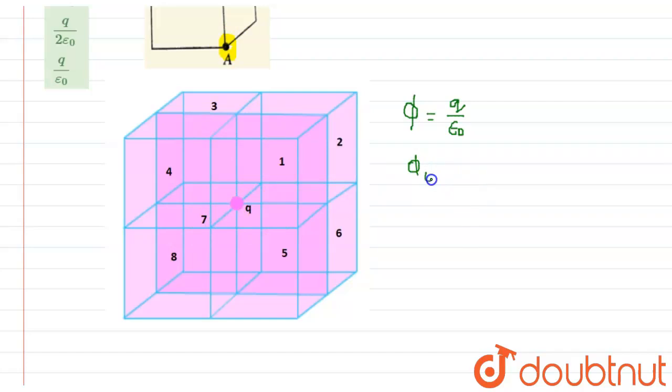Therefore, the answer is φ = (1/8) × (q/ε₀). The answer for this question is option 8.